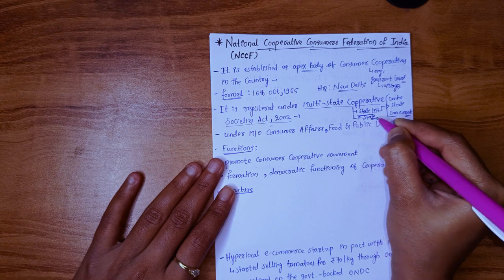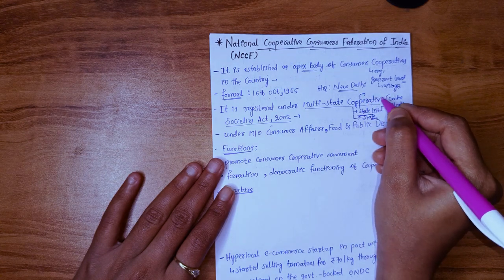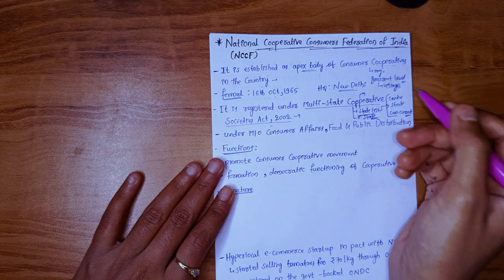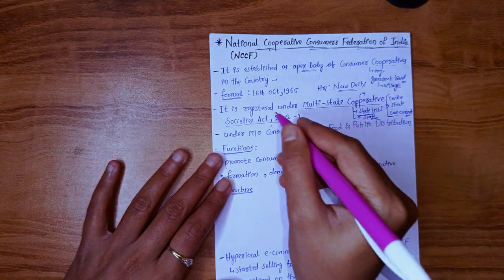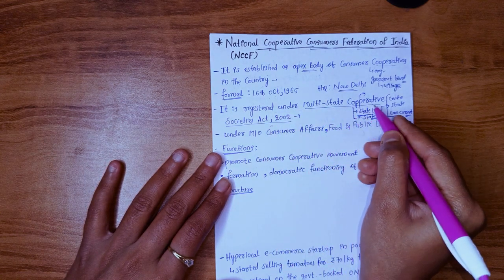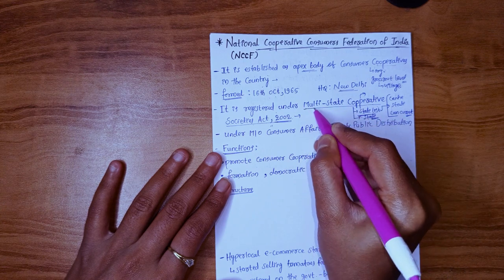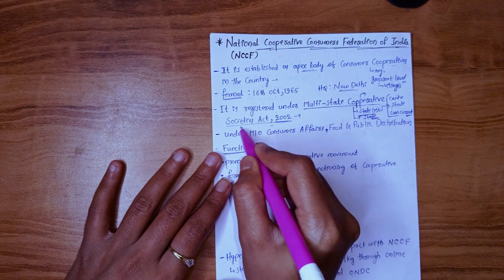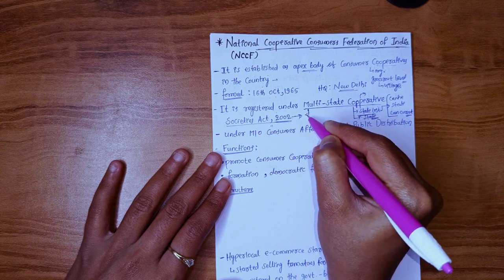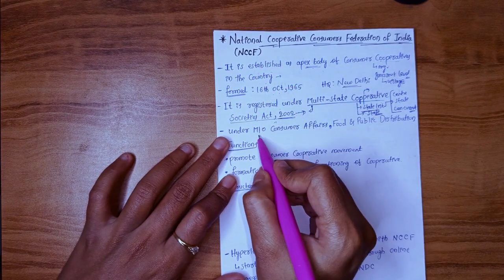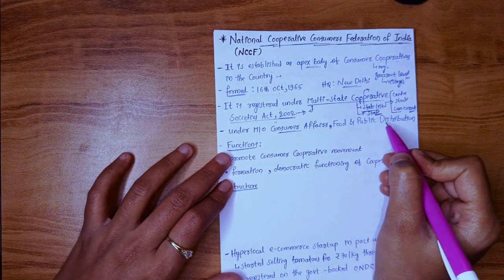The jurisdictions of cooperatives are handled by states only. The particular states where these cooperatives are established will take care of all the responsibilities. Sometimes, cooperatives will come under two or more states — such cooperatives will be registered under the Multi-State Cooperative Societies Act 2002. We will separately discuss this act as it is a very important topic for government exams.